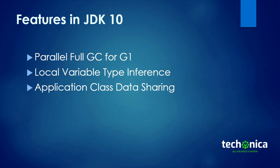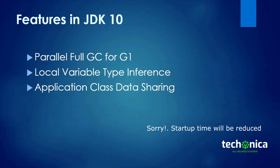Next is application class data sharing. To understand this, we should first understand class data sharing. When JVM starts, there is a shared archive file created by the JRE during installation — it decompiles some jar files, makes a private internal representation, and dumps that to a file called the shared archive. When JVM starts, it loads classes from that shared archive, significantly improving startup time. This was introduced in JDK 5 with modifications through JDK 8 and 9.